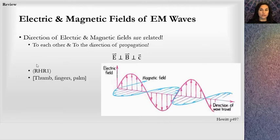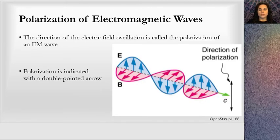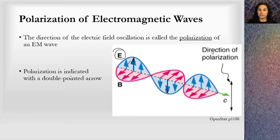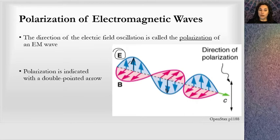When we're looking at the electromagnetic field, polarization is the direction of the electric field oscillation. Notice here it oscillates upward and downward. When we have a representation indicating the direction of polarization, we're going to do that with a double-pointed arrow up and down, because that is the direction the electric field oscillates. We can see in this light wave the electric field oscillates in what looks like the standard y direction.